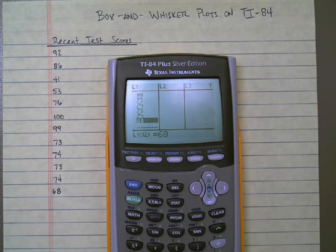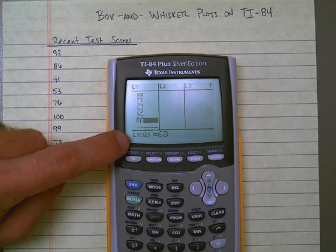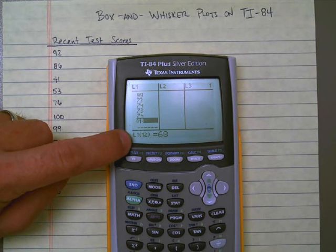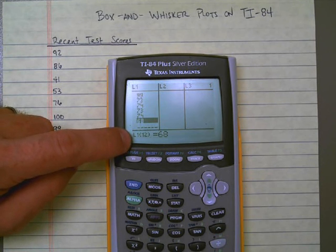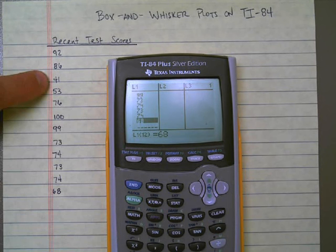Now, here's the nice thing. At the bottom, if I look right here, it says list one, and it says in parentheses 12. And what that really means is that that's the 12th item, the 12th value that I entered in. So a quick check, if I know I have 1, 2, 3, 4, 5, 6, 7, 8, 9, 10, 11, I have 12 values.